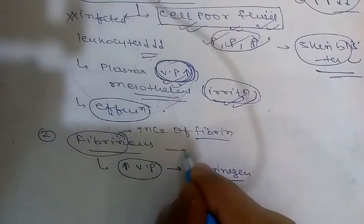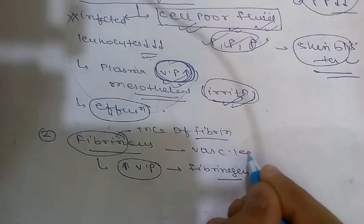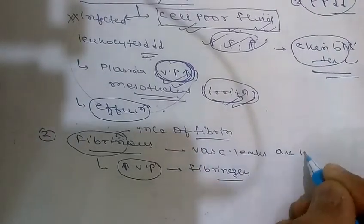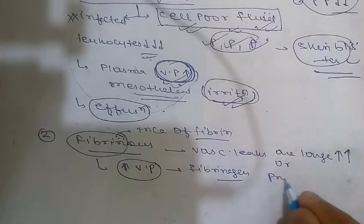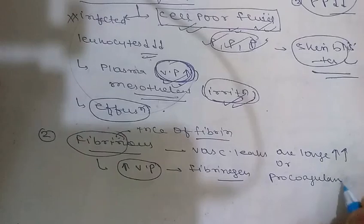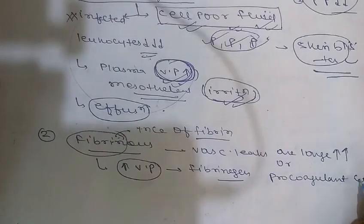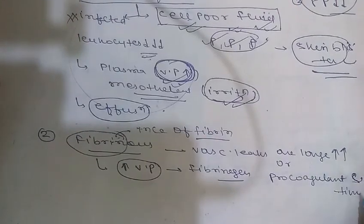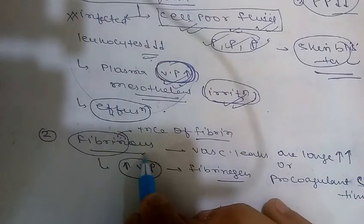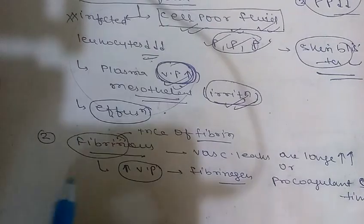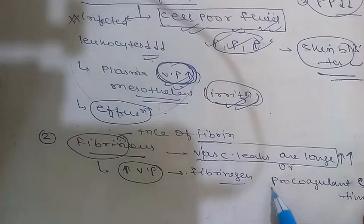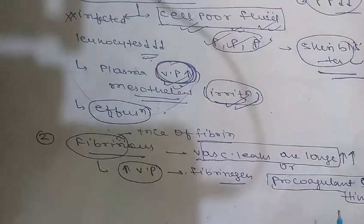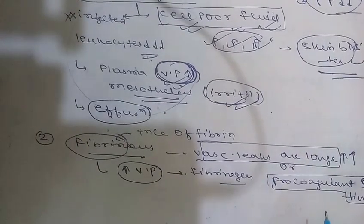Fibrinous exudate develops when vascular leaks are large, or when there is a local pro-coagulant stimulus, as in the case of cancer. These are the two basic reasons for the development of fibrinous inflammation — large vascular leaks and pro-coagulant stimulus.